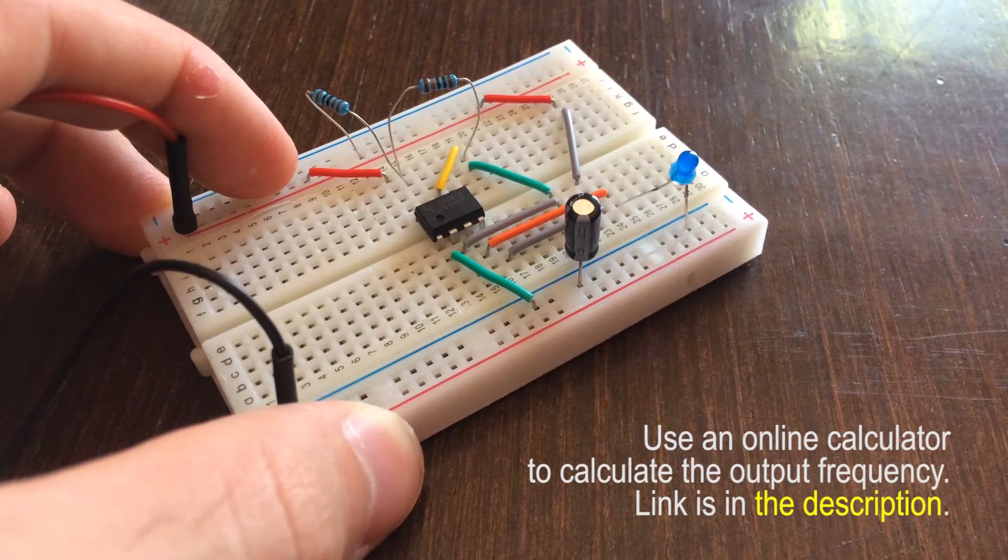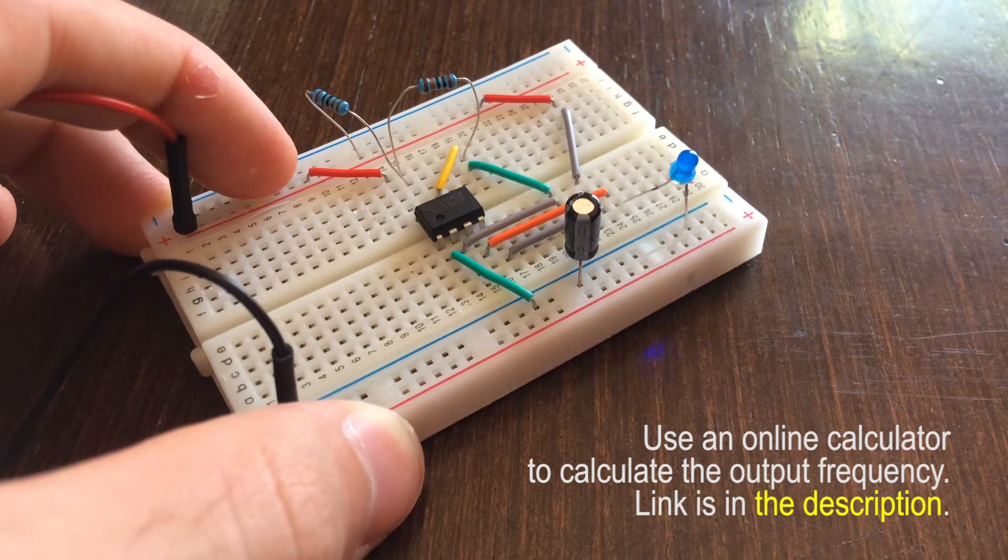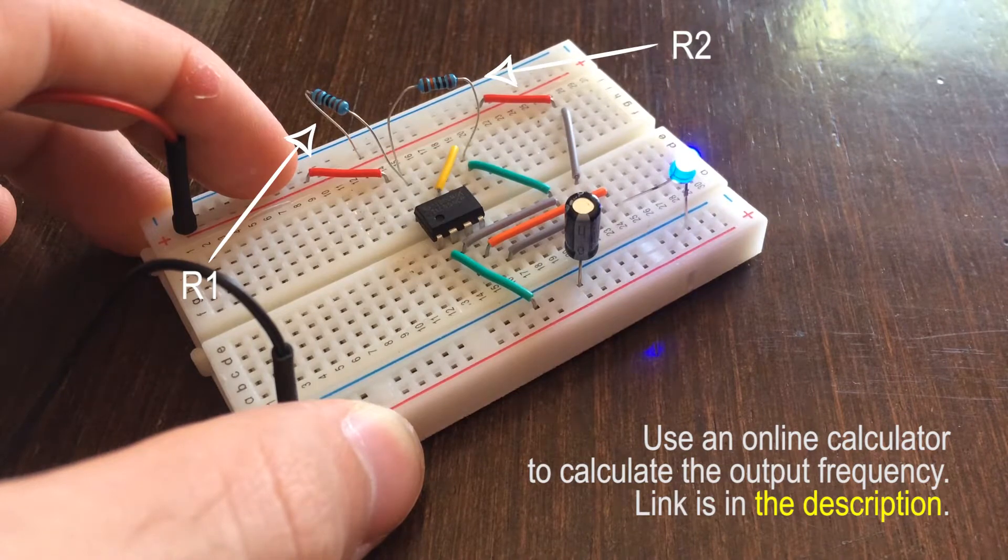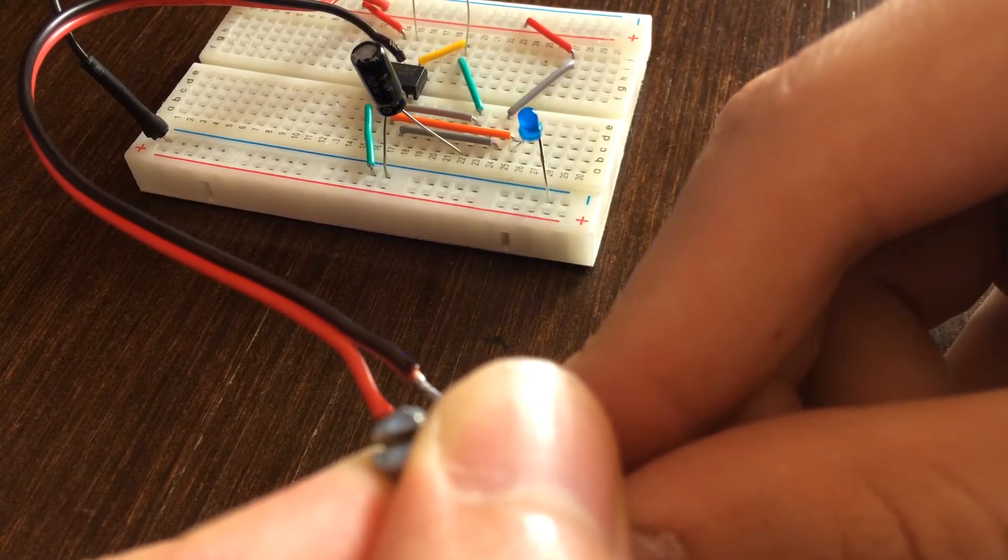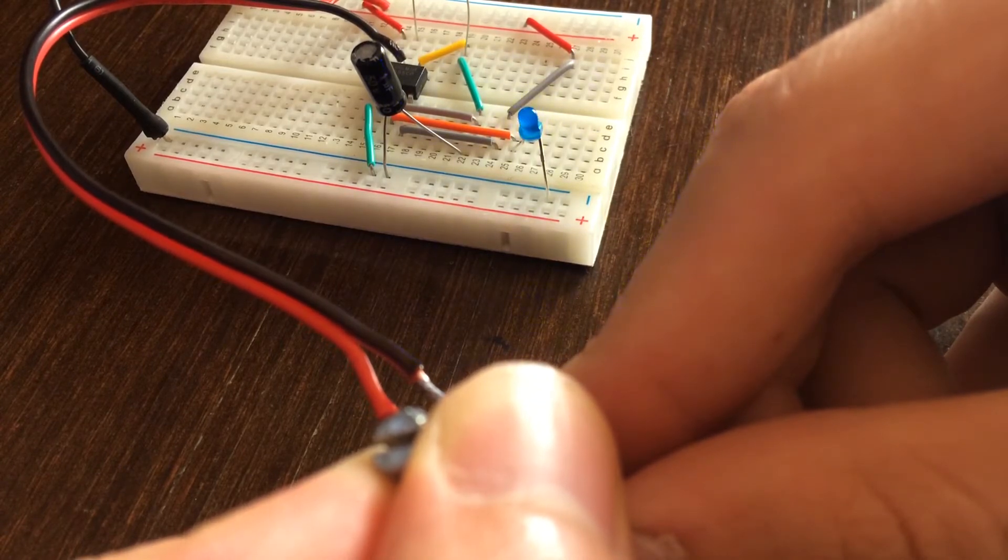You can also change the frequency by varying the resistance of R1 and R2. Potentiometers are sometimes placed instead of fixed resistors if it is necessary to have the ability to adjust the frequency.